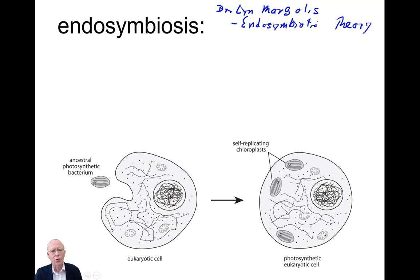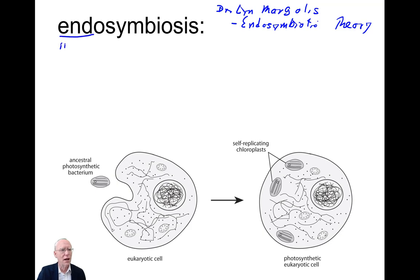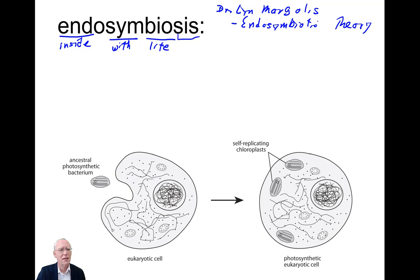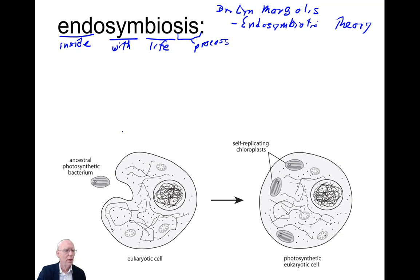I'm going to explain what endosymbiosis means and how we think it took place — not all the evidence, but the story resulting from that evidence. Endo means 'inside,' sym means 'with' or 'together,' bio means 'life,' and the -sis ending indicates a process. So endosymbiosis refers to a process of living together inside.